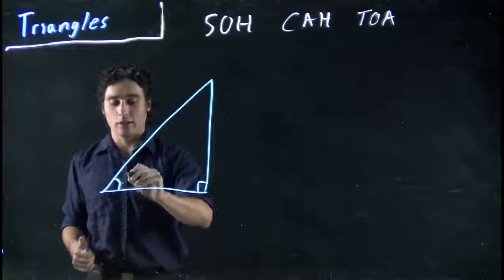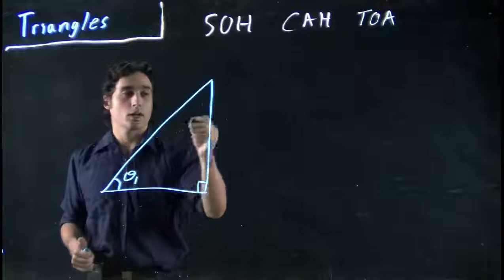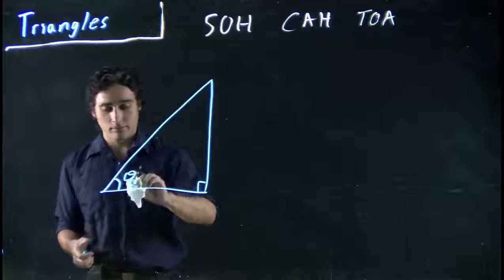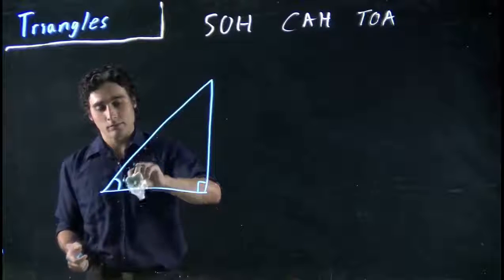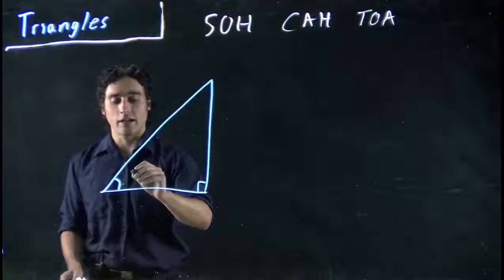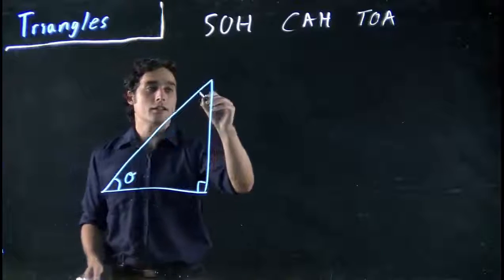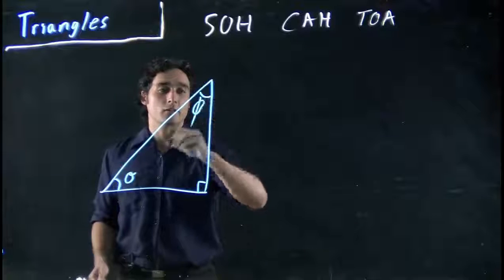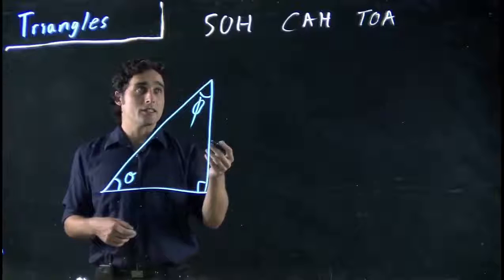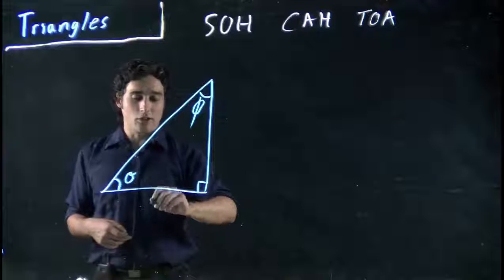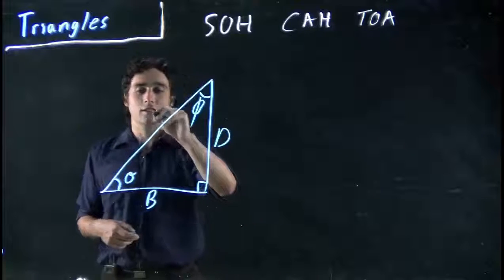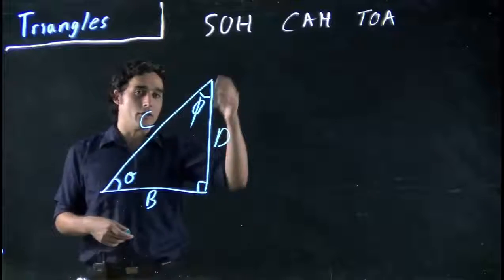And I'm going to label some sides. I'm going to call this theta one. We often call, actually, you know what, I'm going to call that theta. No point in using those subscripts if I don't have to. Call this theta. And I call this angle right here phi. So big line through the middle, easier to differentiate between the two. And then I'm going to label these sides. What I'm going to do is call this B, this D, and this C. I don't want to use any of the letters we have up there to confuse you.